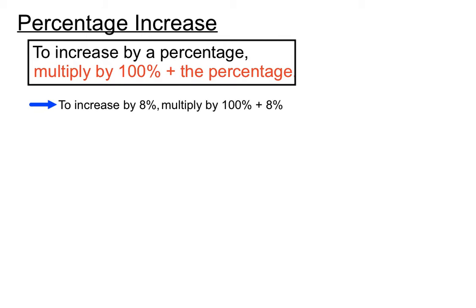If we want to increase by 8 percent, we multiply by 100% plus 8%, which gives us 108%. The easiest way to do that is to think of it as a decimal — 108% is just over one whole, since 100% is one whole. So we multiply by the decimal version of 108%, which is 1.08.